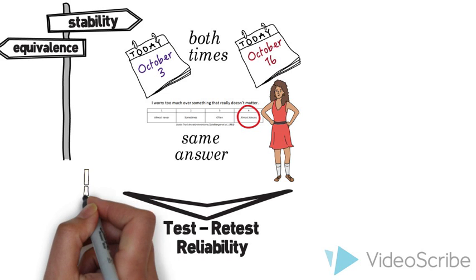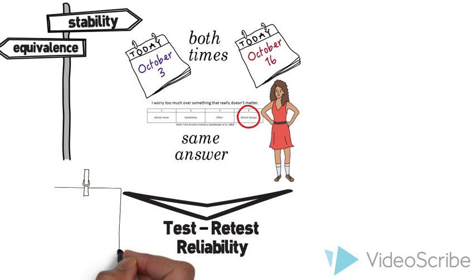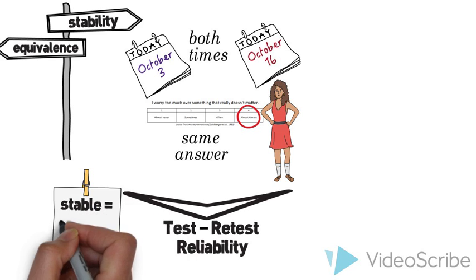The closer the answers at each point are to each other, the more stable the question is and the higher the test-retest reliability is.